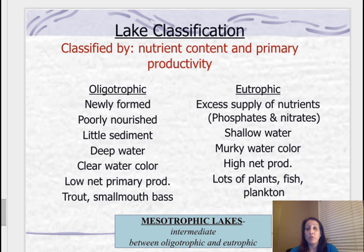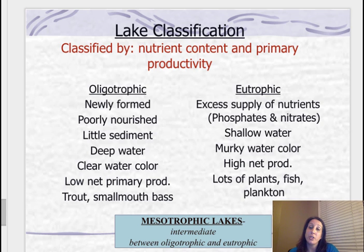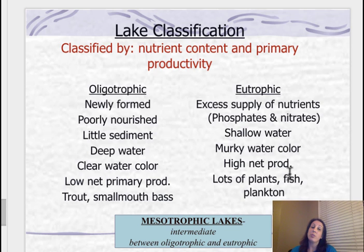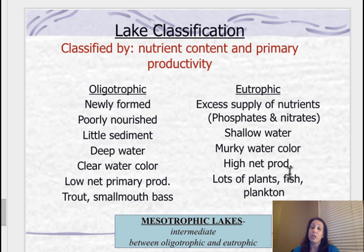Then you have mesotrophic, which is in the middle — an intermediate between oligotrophic and eutrophic. What's called cultural eutrophication refers to the excess of phosphates and nitrates — it leads to hyper-eutrophication, though on the AP exam they just call it eutrophication. There are two types: cultural, which is what we cause with excess fertilizers containing phosphates and nitrates, and natural eutrophication, which happens on its own.